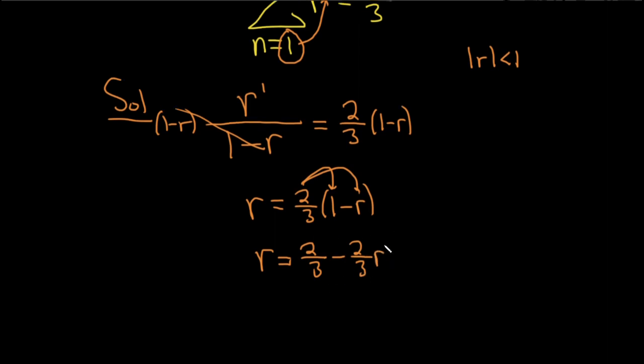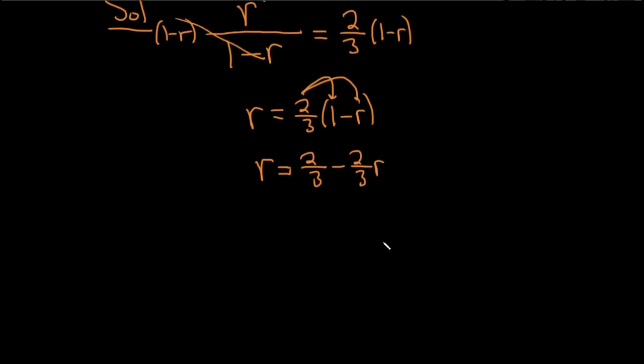And we're trying to solve for r, so maybe we can get all the r's together on one side. You know, if the fractions are annoying, what you can do is you can multiply both sides by 3. Let's do that. Put a 3 here, put a 3 here, so you get 3r equals 3 times 2 thirds is 2, minus, and then same thing here, the 3's cancel, so you get 2r. Just makes it a little bit cleaner.